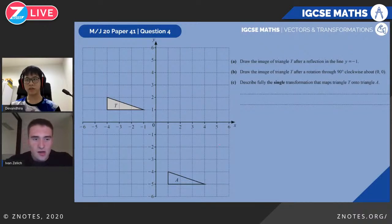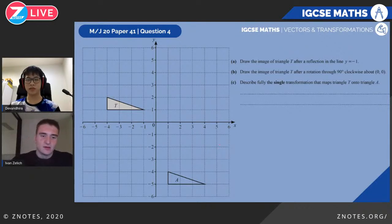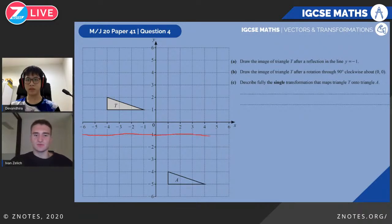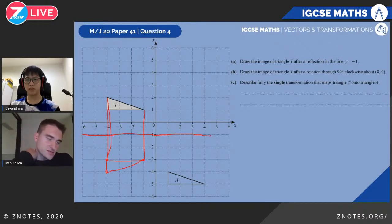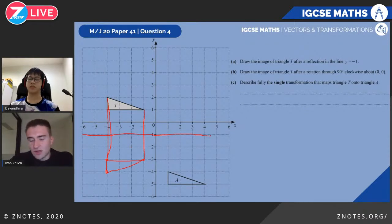Now draw the image of triangle T after reflection in the line y = −1. The line y = −1 is this horizontal line. A simple approach: figure out where each point goes when reflected across this line. This point will go here, this point will go there, and this point will go here — giving us the reflected triangle. As discussed, reflections reverse orientation, which is why the triangle is now flipped.